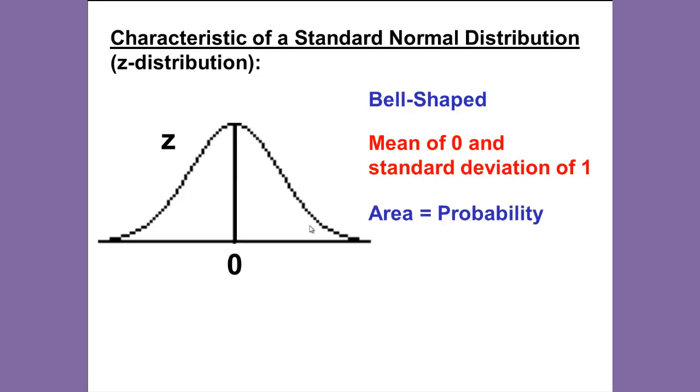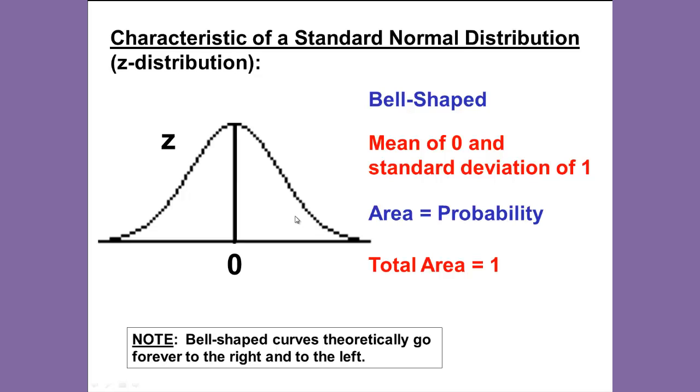The area under the curve is the same as the probability, and the total area or the total probability is equal to one. Remember, even though the graph on my screen doesn't actually show it, the bell-shaped curves theoretically go forever to the right and to the left—to infinity and beyond.